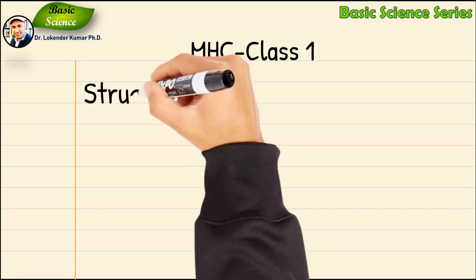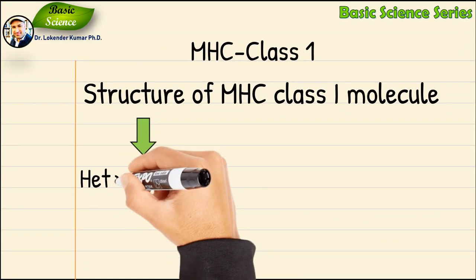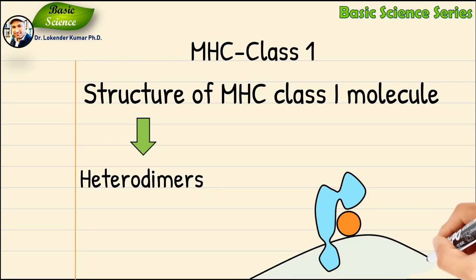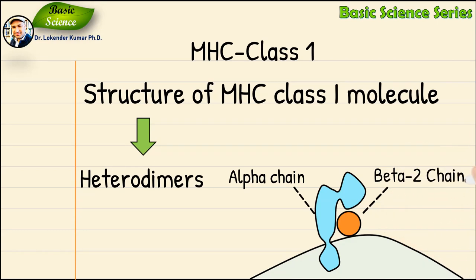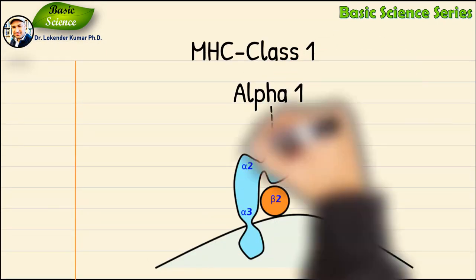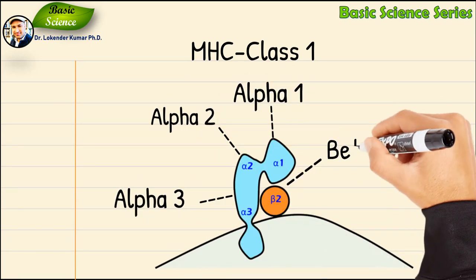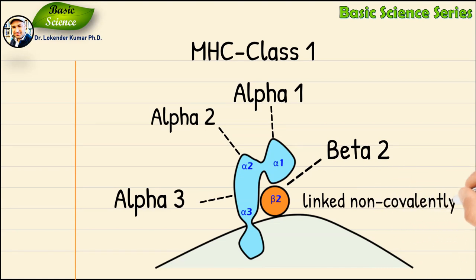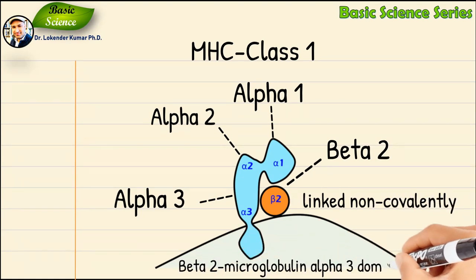Let us know about the structure of MHC class 1 molecule. MHC class 1 molecules are heterodimers, meaning they consist of two polypeptide chains: an alpha chain and a beta-2 microglobulin chain. The alpha chain contains three domains: alpha 1, alpha 2, and alpha 3. The alpha and beta-2 microglobulin chains are linked non-covalently via interaction of beta-2 microglobulin and the alpha 3 domain.